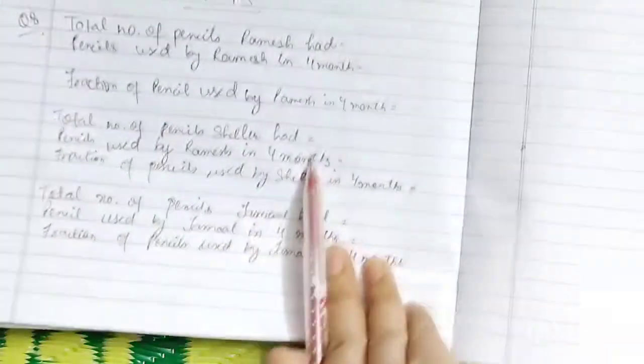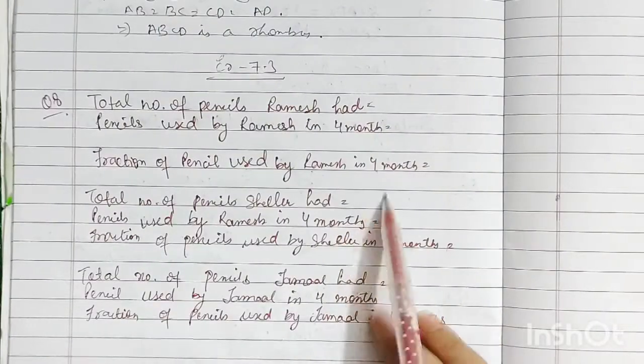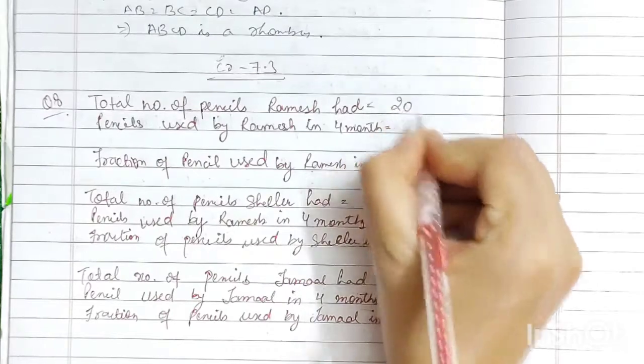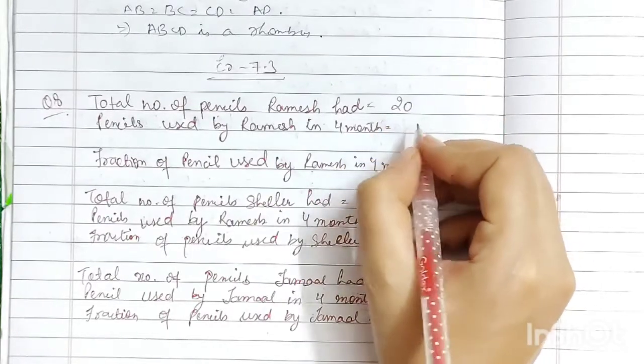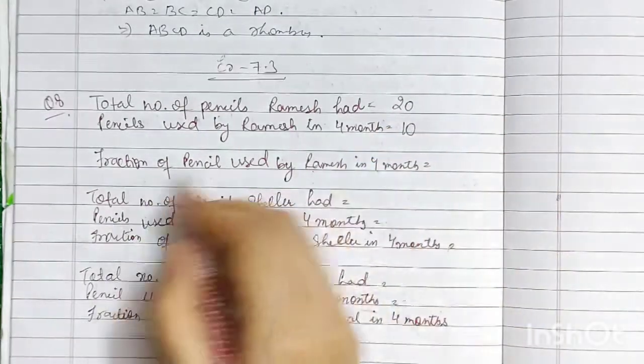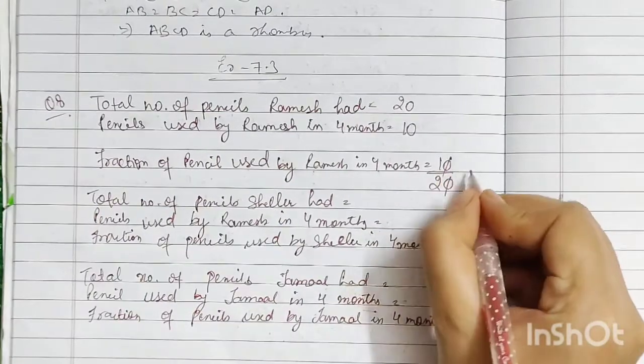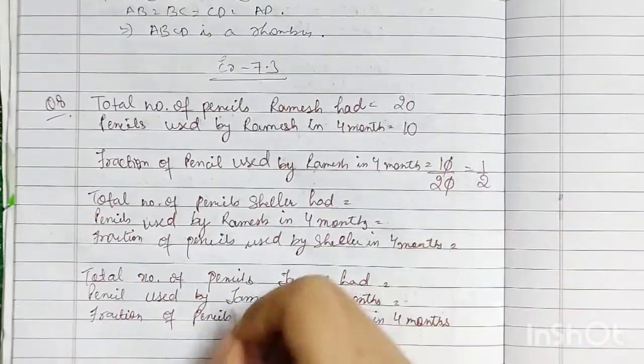We will continue to do this question. This is 7.3 question number 8. Ramesh had 4 months ago 20 pencils. 4 months later, he had used up 10 pencils. So, the fraction was 10 upon 20, when the zeros are cancelled, then 1 by 2.